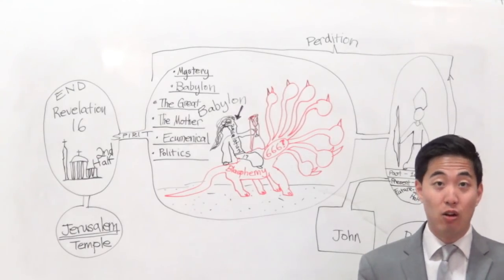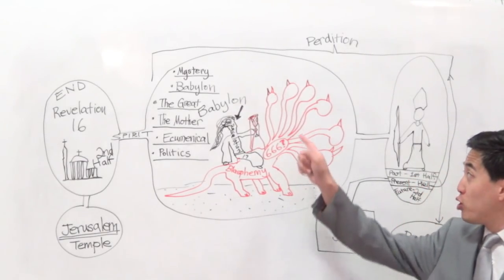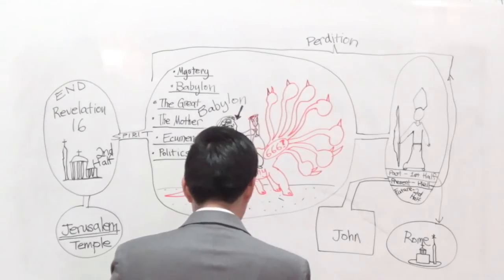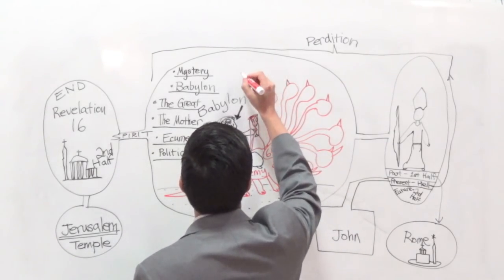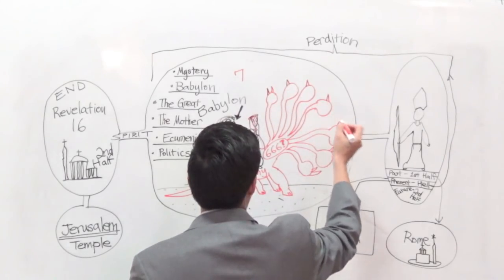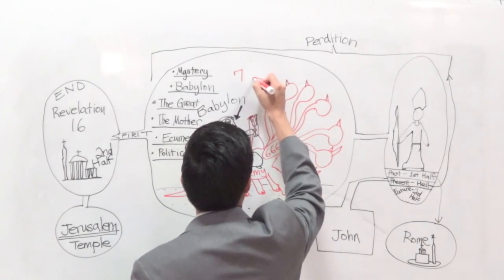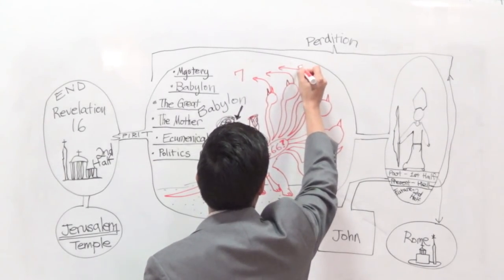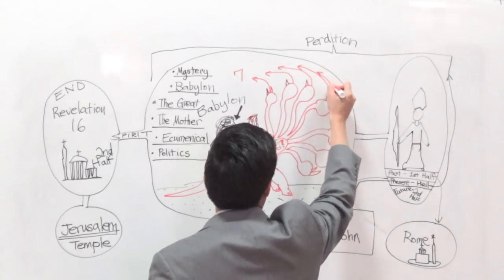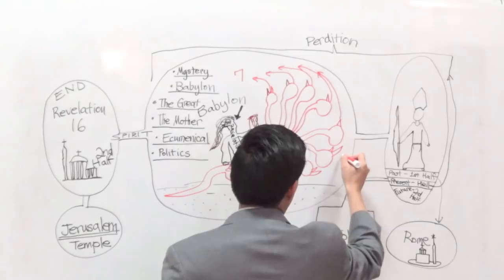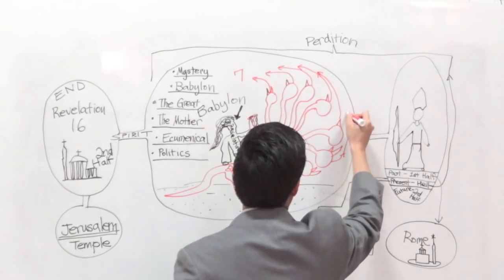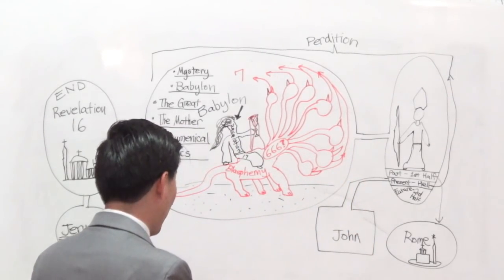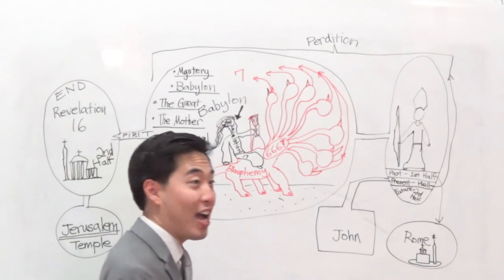The seven heads are seven mountains on which the woman sitteth. There's your big key there. God says if you're going to be smart, you're going to recognize this clue about who this woman is riding the beast. Seven heads are seven mountains. Wait a minute, what city, the woman is called the city, right, at Revelation 17. What city is known as the city sitting on the seven hills or mountains? Yeah, it's Rome.